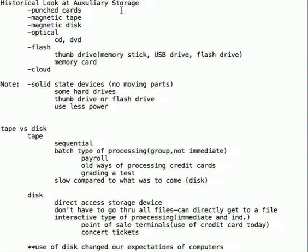It's the place where we put stuff that we don't want to use right now, but want to use later on. In the old days, in the 40s, one of the first mechanisms for auxiliary storage was punch cards. Now, punch cards didn't last very long. Soon in the 50s, we went to magnetic tape, and later on in the 60s, magnetic disc was introduced.